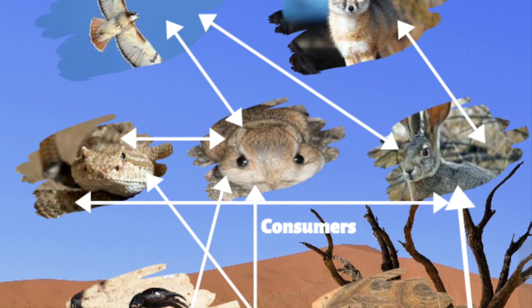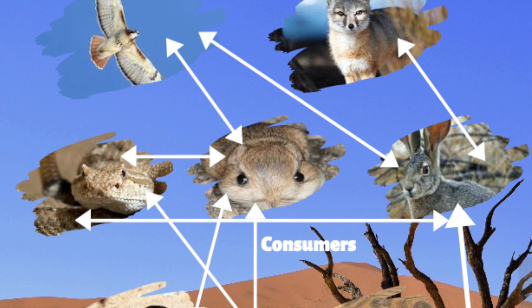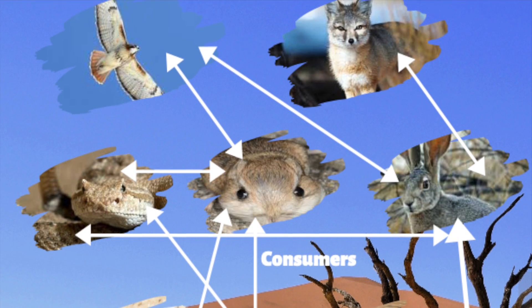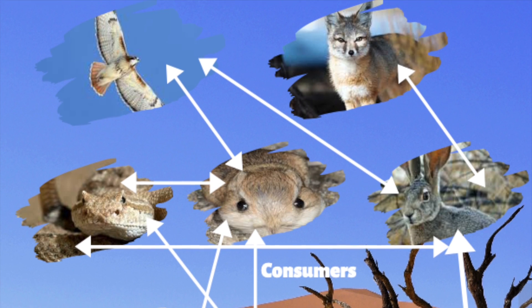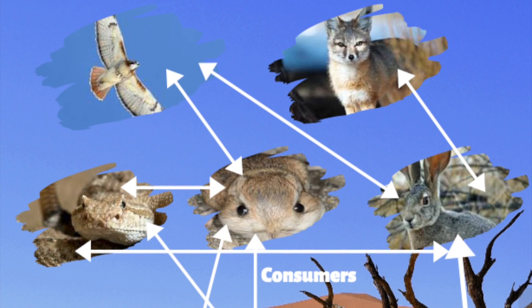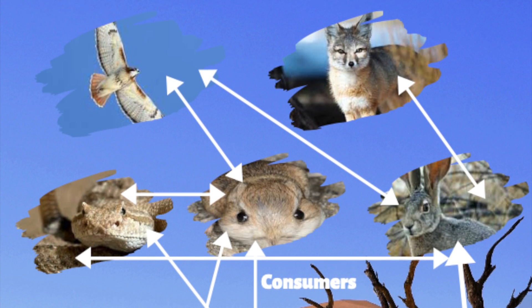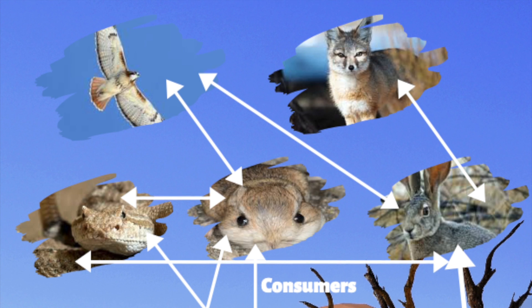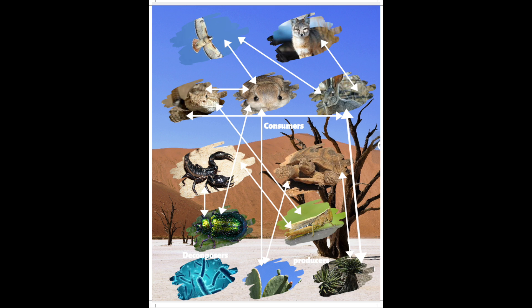For example, when a kangaroo rat eats seeds, energy stored in the seeds flows to the rat. When a hawk eats the rat, energy flows from the rat to the hawk. When the hawk dies, the energy left in the waste and dead hawk flows to the decomposers. Decomposers like fungi and bacteria return energies and nutrients to the soil, water, or air, where they can be used again by plants. During every step of energy flow, there is always some loss of energy in the form of heat.